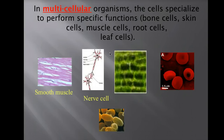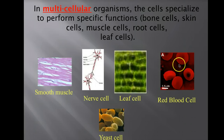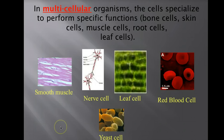Here we show some examples of different types of cells. We have smooth muscle cells, leaf cells, red blood cells, a yeast cell, and this is what a nerve cell looks like.